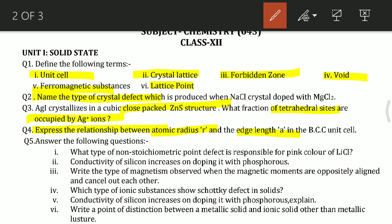Question number 5: answer the following questions. These are reasoning questions. What type of non-stoichiometric point defect is responsible for pink color of LiCl? Why does conductivity of silicon increase on doping it with phosphorous? Write the type of magnetism observed when magnetic moments are oppositely aligned and cancel out each other. Which type of ionic substances show Schottky defect in solids?